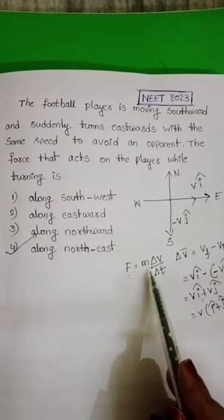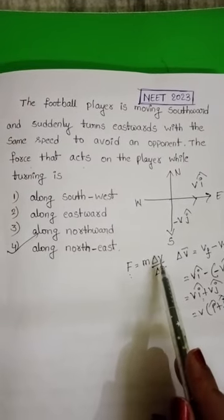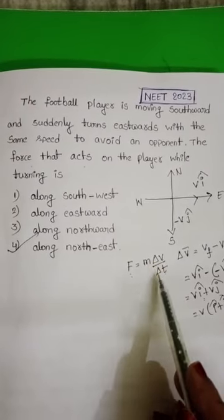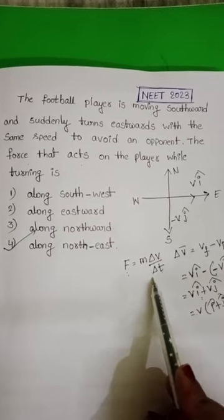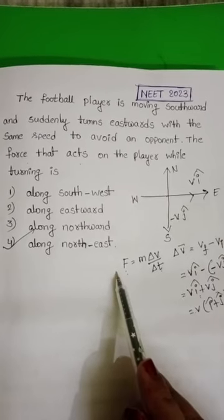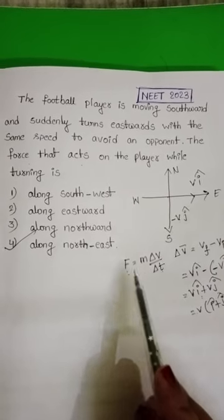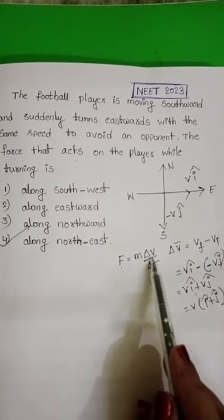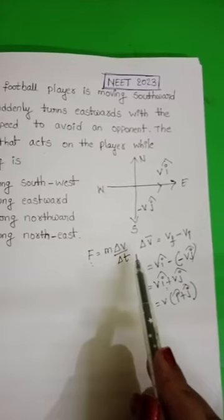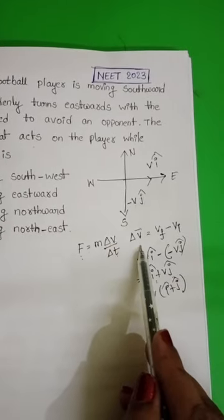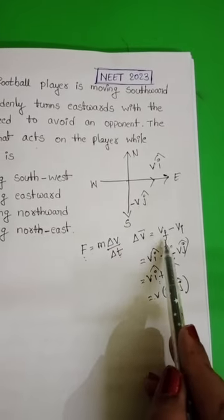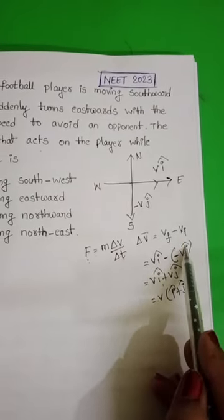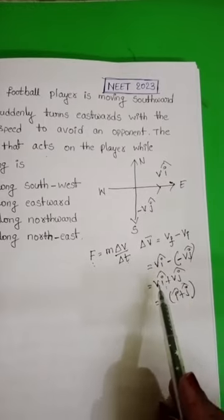Force equals mass into acceleration, which is the rate of change of velocity. The direction of force is in the same direction as the change in velocity. Change in velocity equals final velocity minus initial velocity.